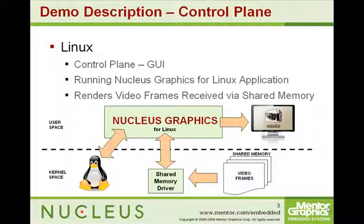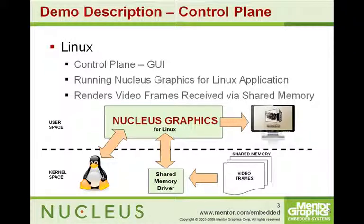In the locations in the menu where you would select from different videos, instead of having just still pictures, we've taken the decoded video frames and we're actually playing video in the menuing system. From the diagram you can see that we're taking the video frames decoded by the Nucleus core, those are being placed into shared memory by Nucleus, and then we're utilizing those with Nucleus Graphics on the Linux side.